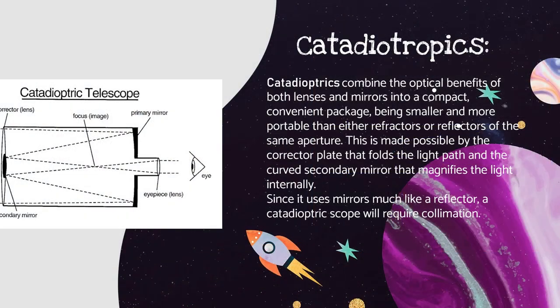In catadioptrics, both lenses and mirrors are used together, making them smaller and more portable than both refractors and reflectors of the same aperture. This is possible because the corrector plate folds the light path and the curved secondary mirror magnifies the light internally.